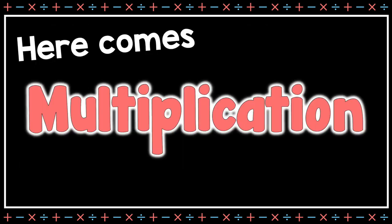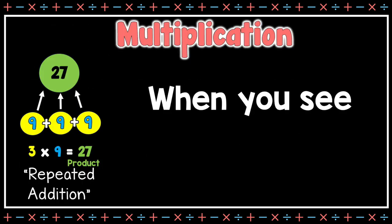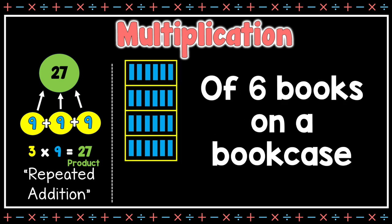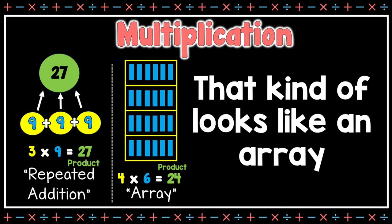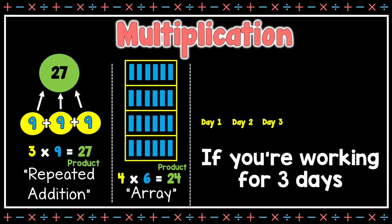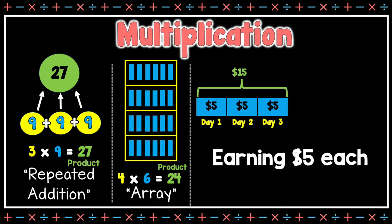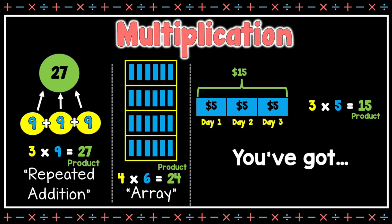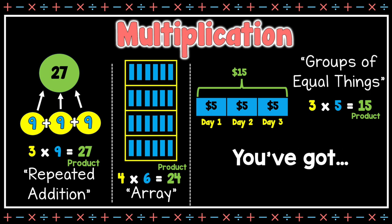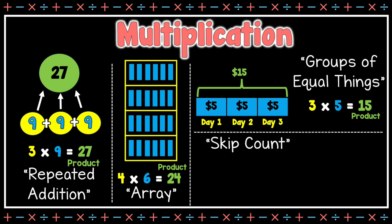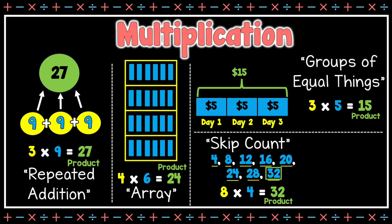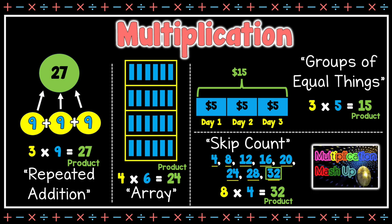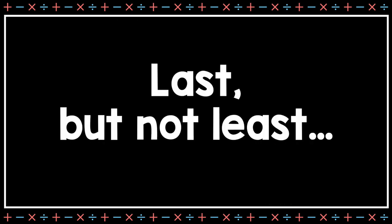You know it's multiplication when you see repeated additions, or like four shelves of six books on a bookcase — hey, you know what? That kinda looks like an array! If you're working for three days earning five dollars each, check it out — you've got groups of equal things. If you'd like to skip count to find the total, or the product, we'll pop in the multiplication mashup!